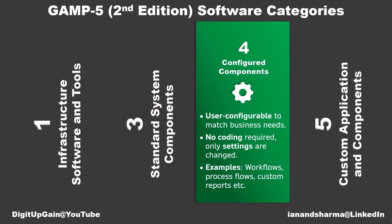Category 4 software is more flexible. You can configure it to fit your business needs using built-in tools, like creating workflows, turning features on and off, and customizing reports, but without changing the code.